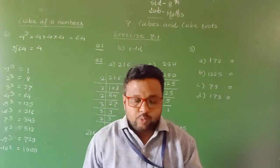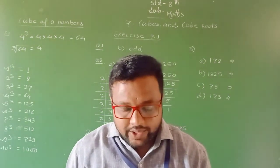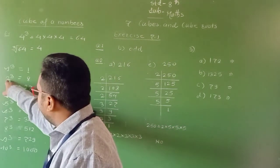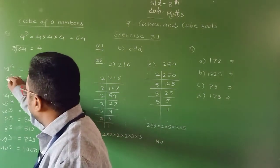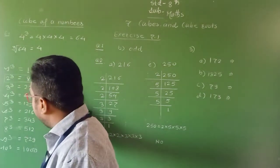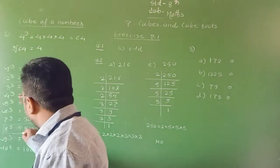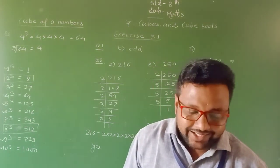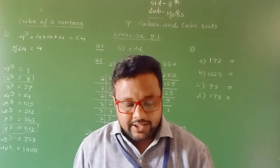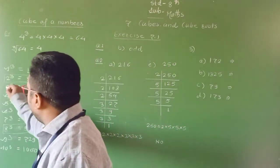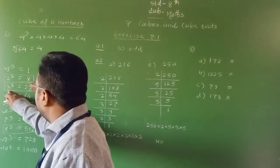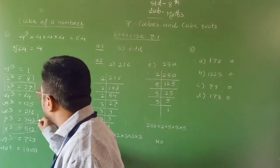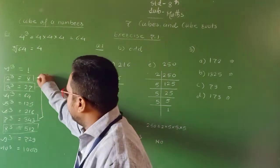The next property: cubes of numbers ending in digit 2 and 8 end in the digits 8 and 2 respectively. So 2 cubed is 8, and 8 cubed ends in 2. Similarly, cubes of numbers ending in digit 3 and 7 end in the digits 7 and 3. So 3 cubed is 27, ending in 7, and 7 cubed ends in 3. Remember: 3 and 7, and 2 and 8.